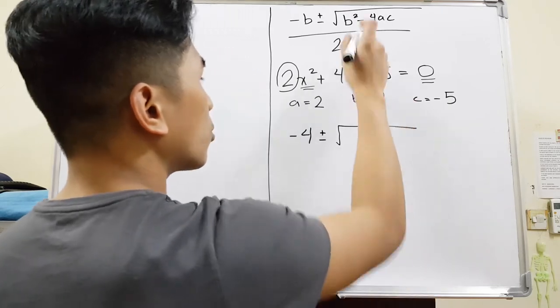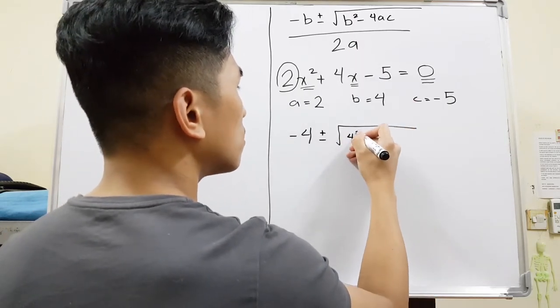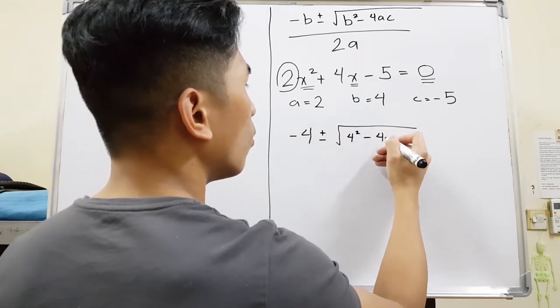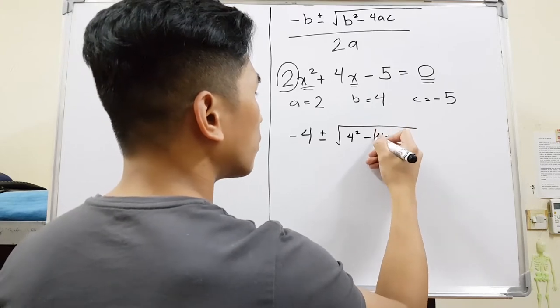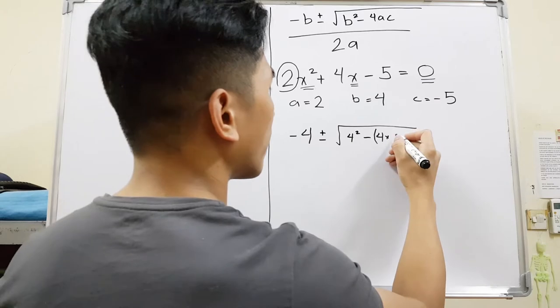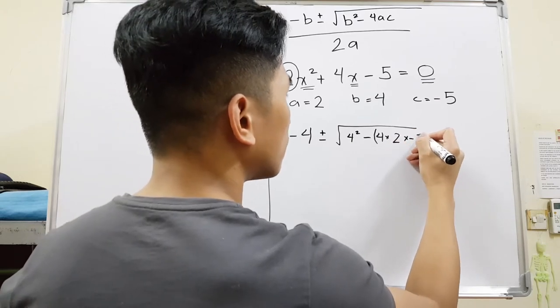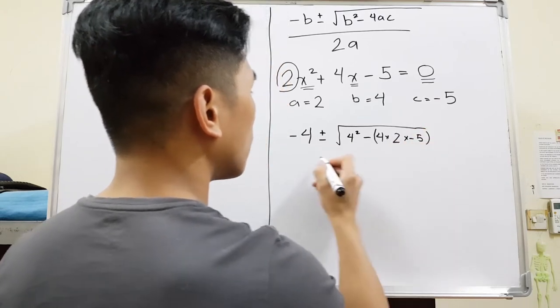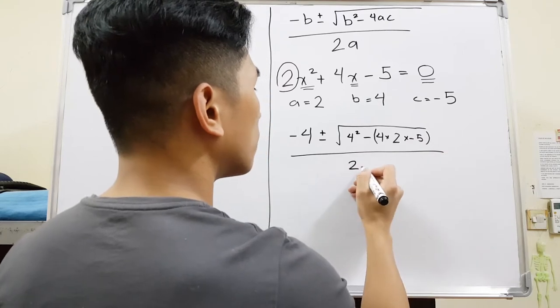Square root of B squared, so 4 squared, minus 4 times, I'll just put bracket here, 4 times A and C. A is 2, C is 5. All over 2A.